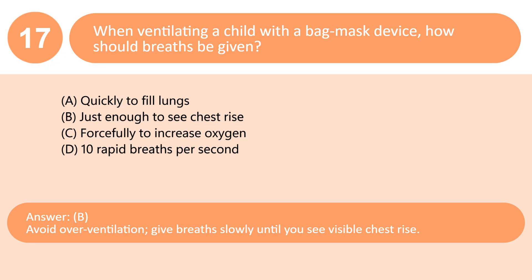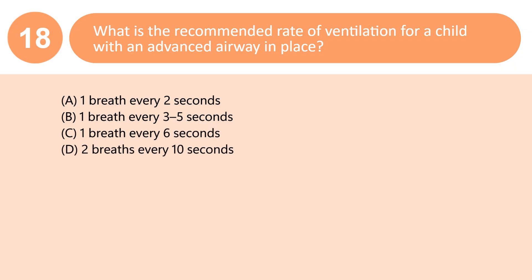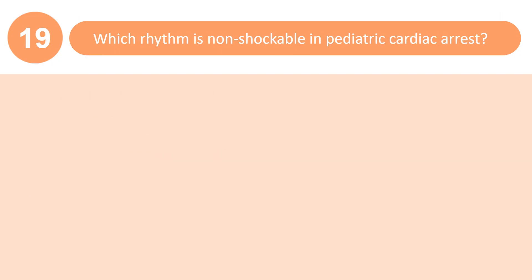What is the recommended rate of ventilation for a child with an advanced airway in place? A. One breath every 2 seconds. B. One breath every 3–5 seconds. C. One breath every 6 seconds. D. Two breaths every 10 seconds. Answer: C. For children with an advanced airway, provide one breath every 6 seconds (10 breaths/min) without pausing compressions.